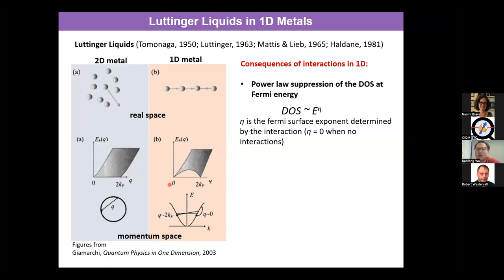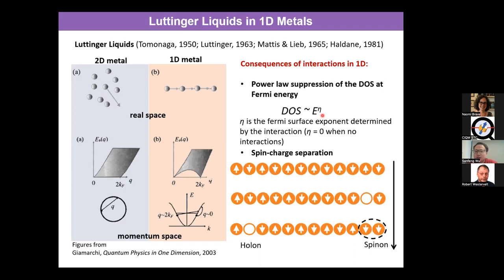For this type of 1D system, very different from 2D and 3D, if you consider interactions — this is the Luttinger liquid model — it can be very well calculated. The consequence is very different from Fermi liquid theory. You actually introduce a dramatic change: the Fermi surface is described by a power-law suppression of the single-particle density of states, with exponent eta. This means that if you want to add electrons to the system, it's not easy — you have to pay energy, different from the Fermi gas. The more energy you have, the higher probability of adding one electron to the system because of the correlations. The exponent eta is zero when you don't have electron interactions.